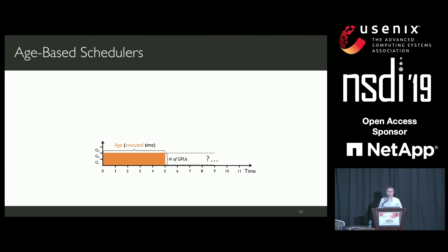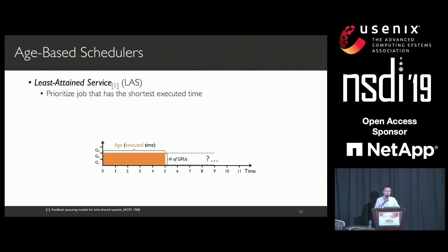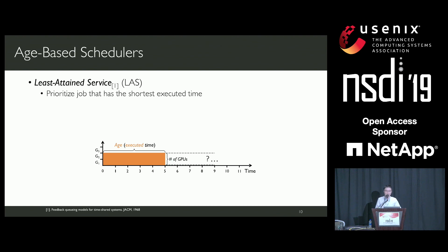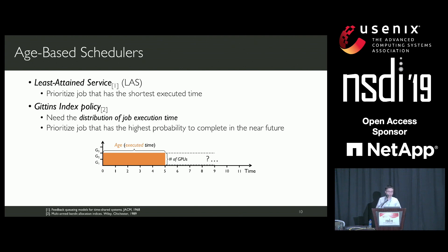There have been several classic age-based schedulers proposed to minimize job completion time. The first is called Least Attained Service, or LAS. In this algorithm, jobs with shorter executed time are preferred, and jobs with longer executed time have their priorities lowered. The idea of LAS has been successfully applied for flow control in data center networks. The second algorithm is called the Gittins index policy. Like LAS, job priority is determined by its age; however, this algorithm also needs to know the distribution of jobs' execution time.